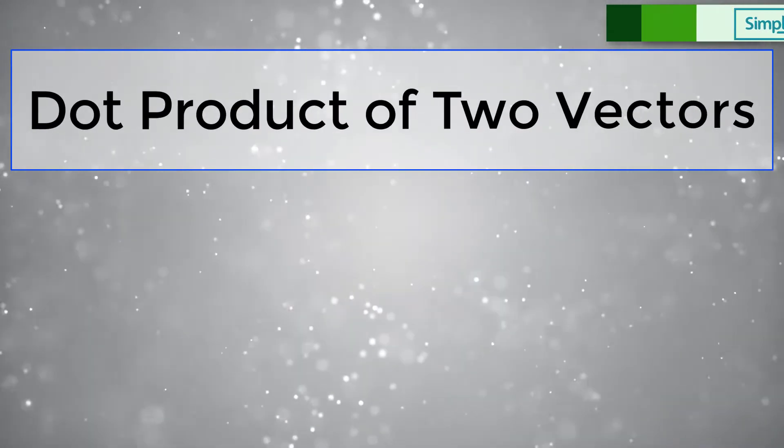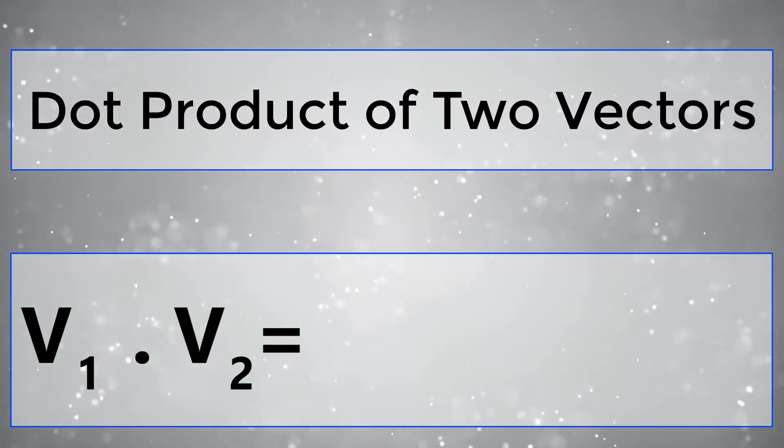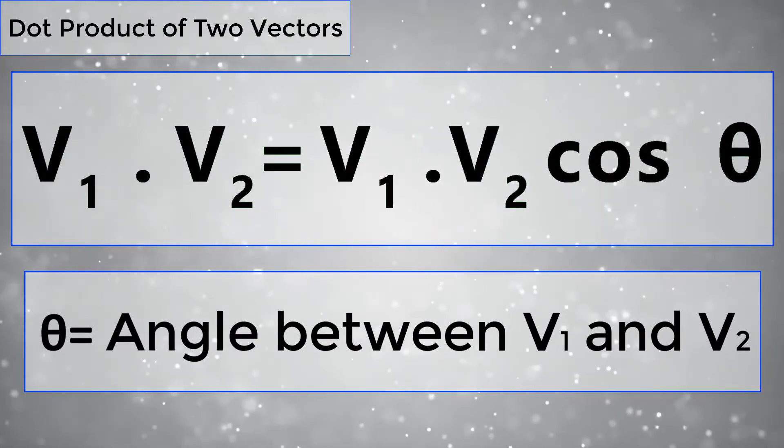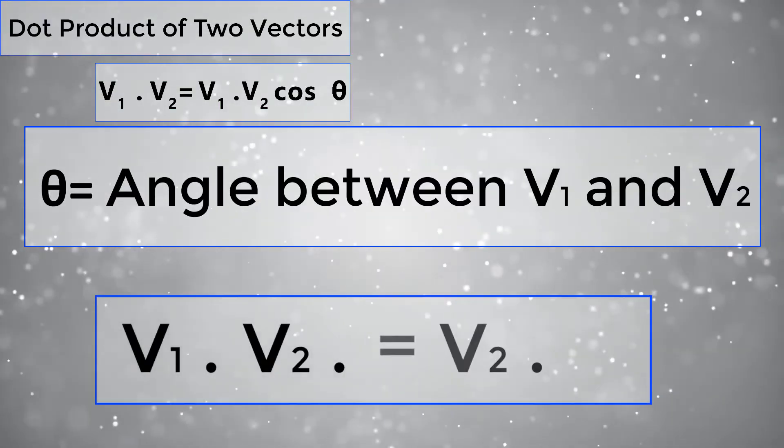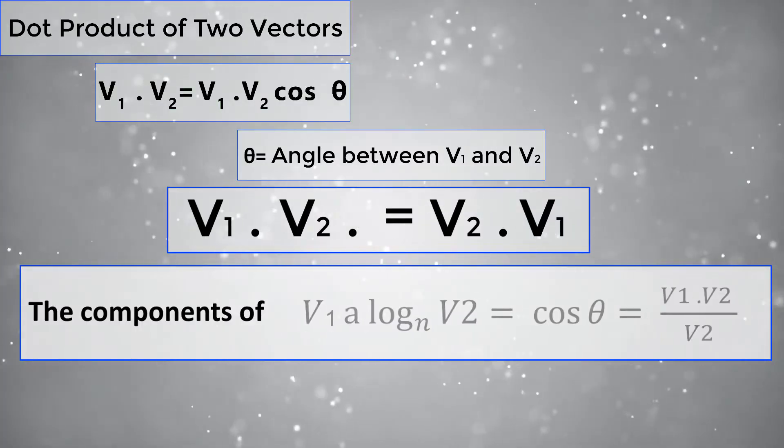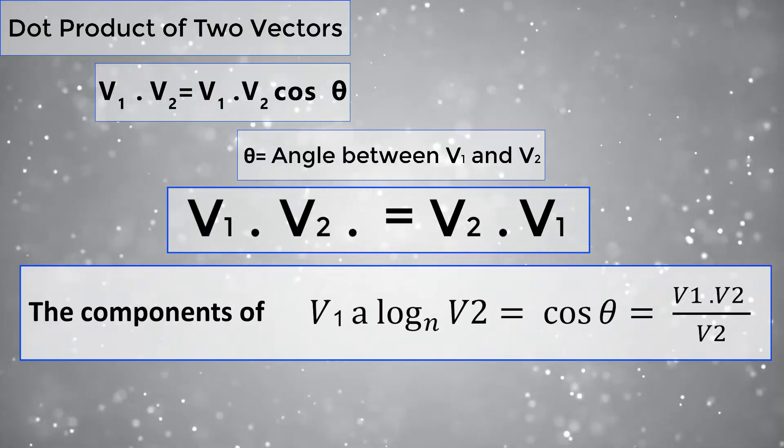Dot product of two vectors: V1 dot V2 equals V1 V2 cos theta, where theta is the angle between V1 and V2. V1 dot V2 equals V2 dot V1. The component of V1 along V2 equals cos theta equals V1 dot V2 by V2.